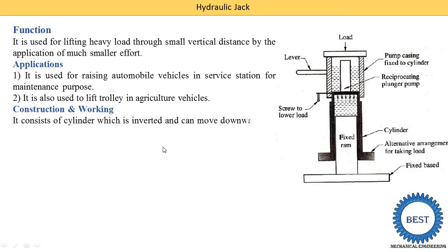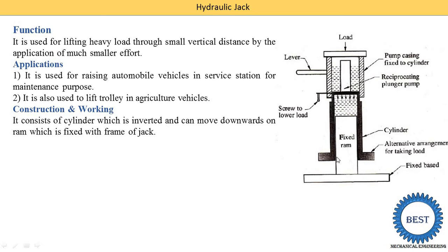Here you see the figure of a Hydraulic Jack. It consists of a cylinder which is inverted — these are the cylinders and it is inverted type. Inside the cylinder, a fixed ram is provided. The inverted cylinder can be moved downwards on a ram which is fixed with the frame. So this cylinder is moving up and down on this fixed ram. When we move it down, the liquid space is reduced. So here we understand two components: fixed ram and cylinder.